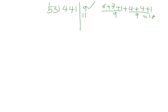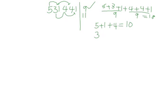We also test for 11. We add the first digit, third digit, and fifth digit, then subtract the second, fourth, and sixth. So we have 5 plus 1 plus 4, which gives us 10. Then 3 plus 4 plus 1, which gives us 8. The difference between these sums is 2. It is not 0, it is not 11, and it is also not a multiple of 11, meaning that 531,441 is not divisible by 11.